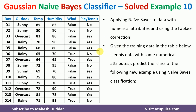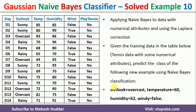Given this dataset, we want to classify a new example where outlook is equal to overcast, temperature is equal to 60, humidity is equal to 62, and wind is equal to false — into one of the classes, either no or yes. To do this, we need to use the Naive Bayes classifier.